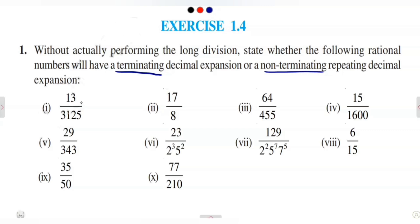According to Theorem 1.6, a rational number of the form P/Q will have a terminating decimal expansion if the denominator Q has a prime factorization of the form 2^N × 5^M. Otherwise, according to Theorem 1.7, if Q's prime factorization is not of the form 2^N × 5^M, then it is a non-terminating repeating decimal expansion.